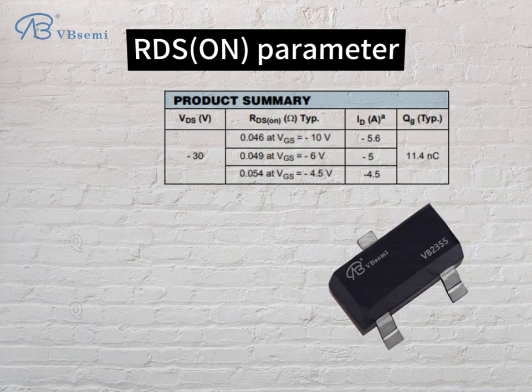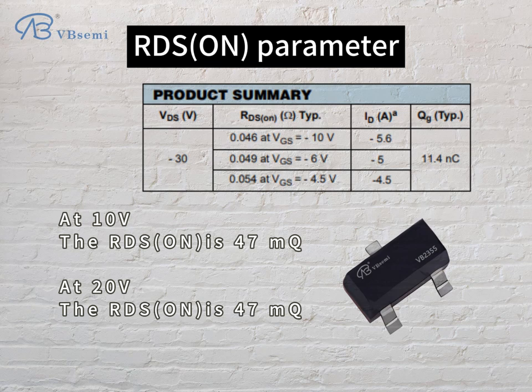RDS on parameter: at 10V, the RDS on is 47mΩ; at 20V, the RDS on is 47mΩ.